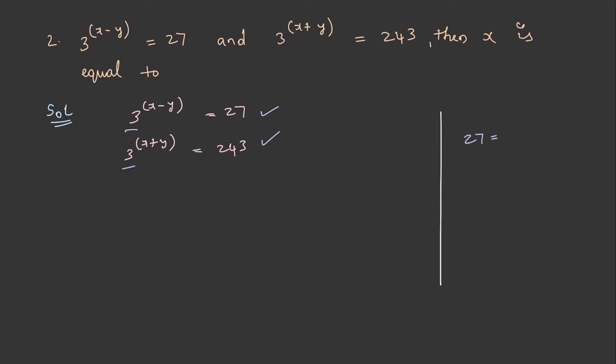So, 27 can be written as 3 cube and 243 can be written as 3 power 5. Now, this becomes 3 power x minus y is equal to 3 cube, and 3 power x plus y is equal to 3 power 5.